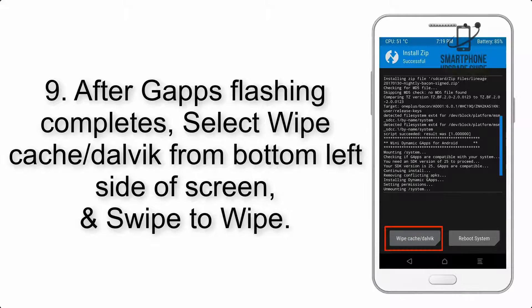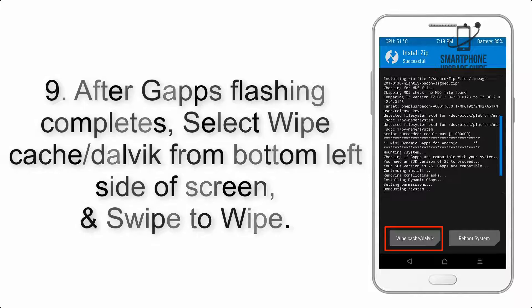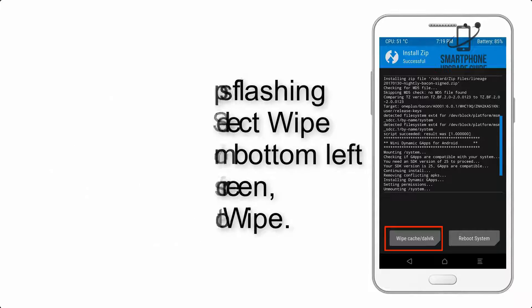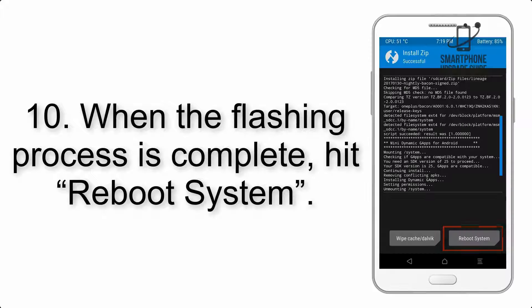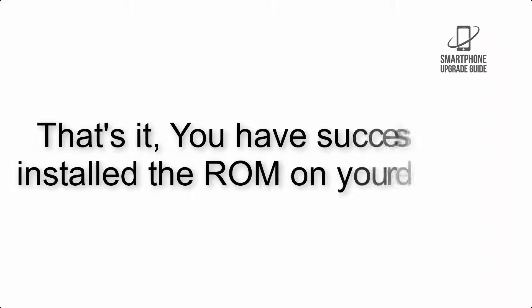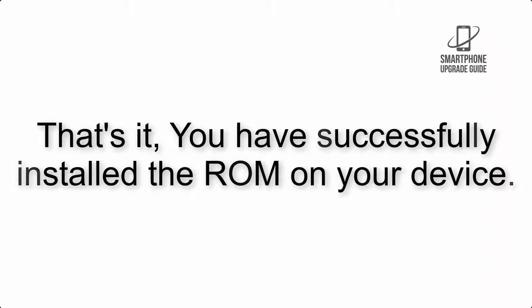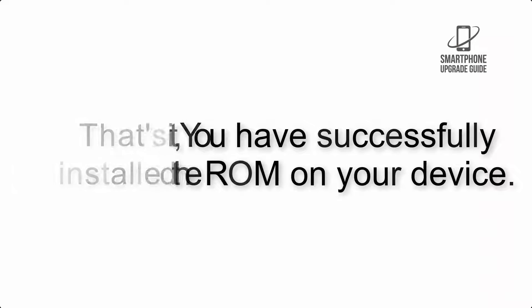Step 8: Flash the GApps zip package in the same manner. Step 9: After GApps flashing completes, select Wipe Cache and Dalvik from the bottom left side of the screen and swipe to wipe. Step 10: When the flashing process is complete, hit Reboot System. That's it — you have successfully installed the ROM on your device.